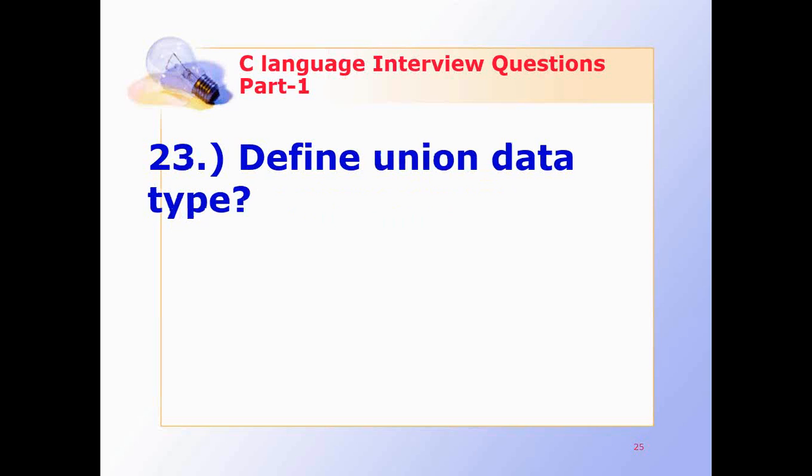Define union data type. A union is a user defined data type that stores multiple values of same or different data types under a single name. In memory, union variables are stored in a common memory location.